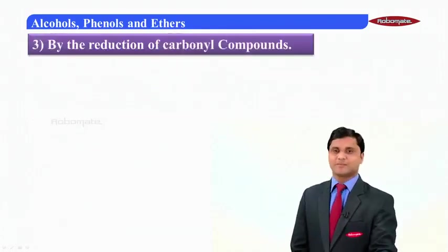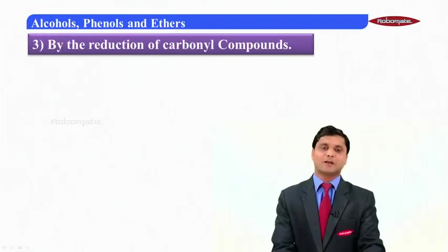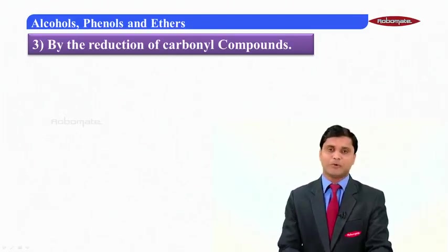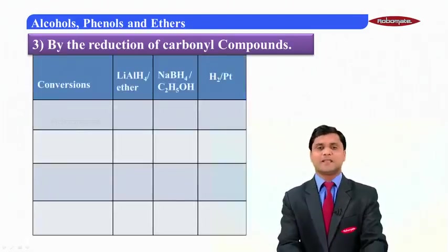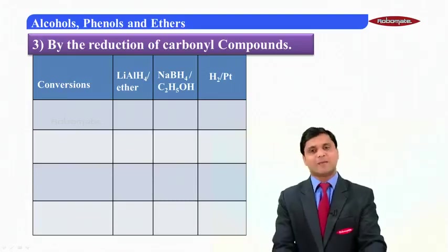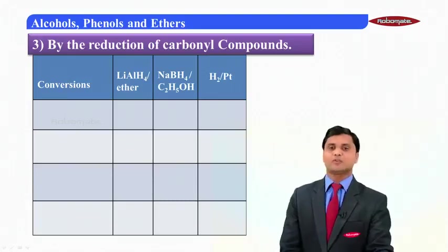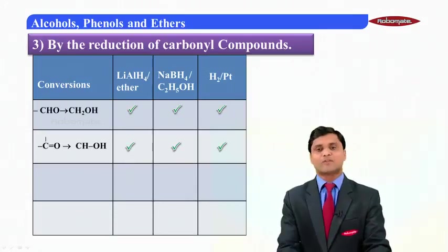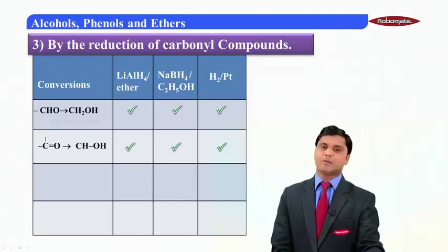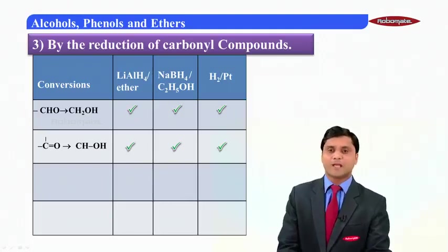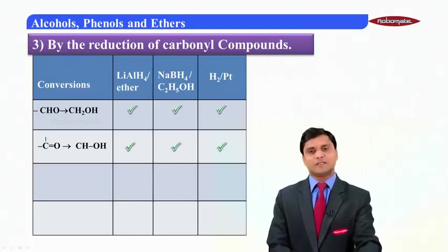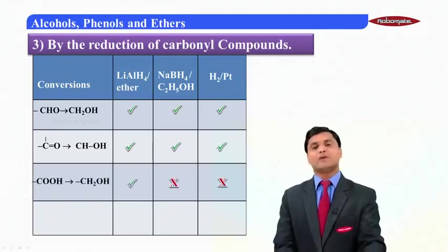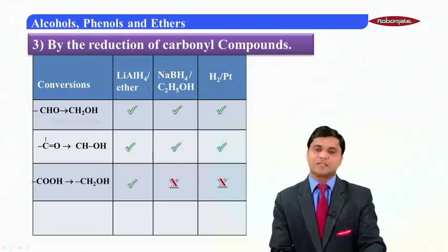The third method is by reduction of carbonyl compounds. Carbonyl compounds are aldehydes and ketones. We will discuss three types of reducing agents: lithium aluminum hydride (LiAlH₄), sodium borohydride (NaBH₄), and hydrogen on platinum. Consider the conversion of an aldehyde (–CHO) or ketone (C=O) into a primary alcohol (–CH₂OH). We can use all three reducing agents for converting aldehydes and ketones to alcohols.